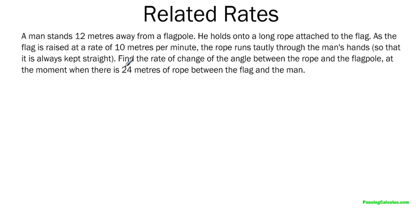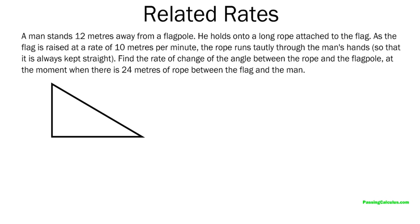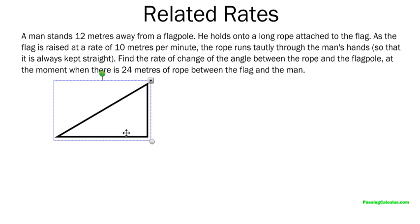Find the rate of change of the angle between the rope and the flagpole, at the moment when there are 24 meters of rope between the flag and the man. So let's draw a little picture. So I'll break it into a little triangle here. I'll just flip that around.